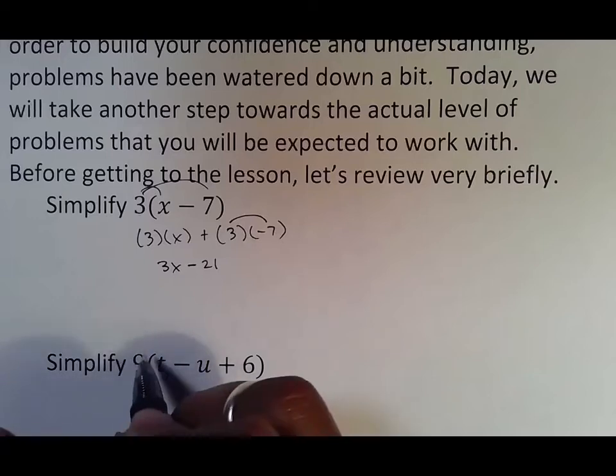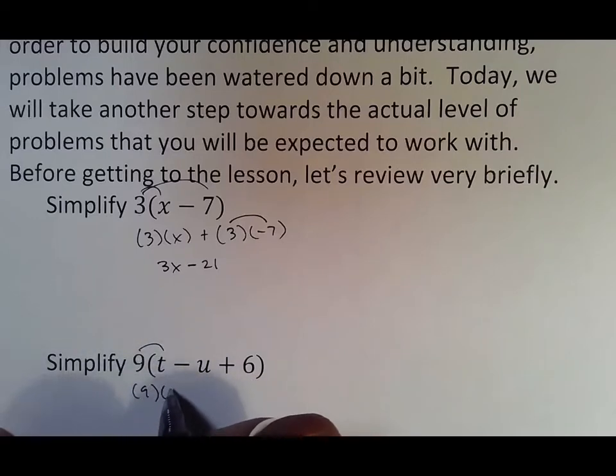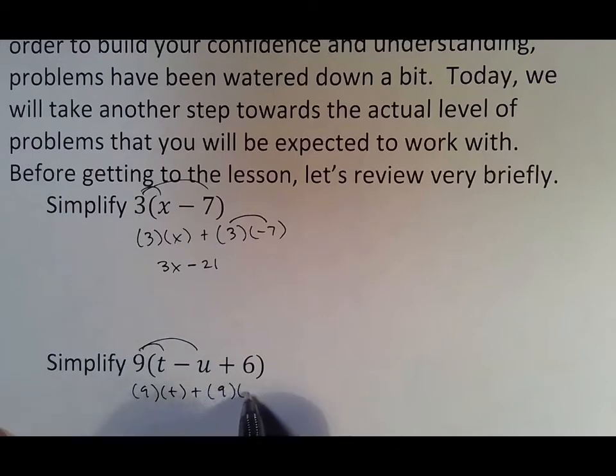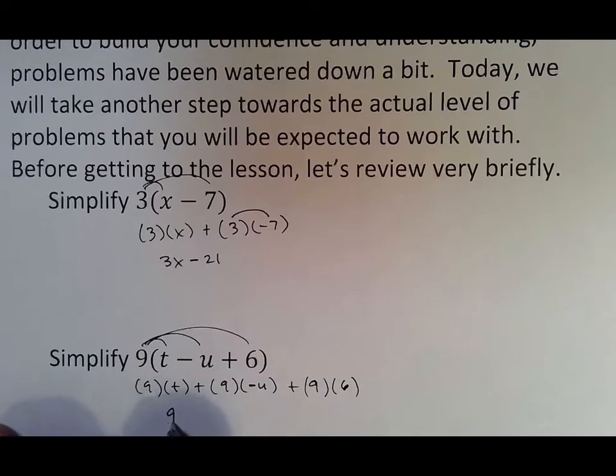Here, three friends: 9 meets t, 9 meets negative u, and 9 meets 6. This turns into 9t, but here again we have a negative times a positive, which makes negative 9u, and then 9 times 6, which is positive 54. So that is what we've seen so far.